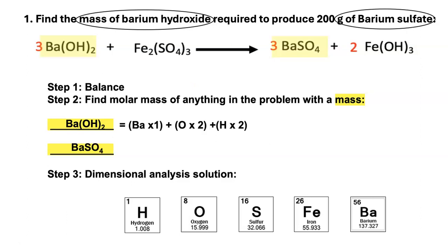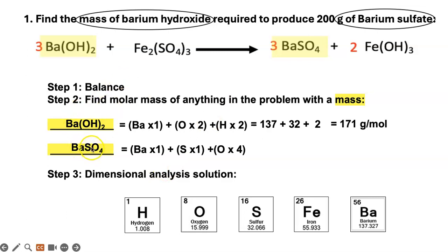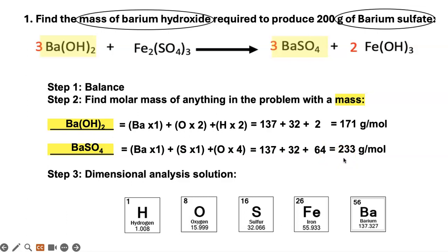Now let's do the molar mass calculations. For barium hydroxide: barium times one, plus oxygen times two, plus hydrogen times two. Substituting the atomic mass values, you get 171 grams per mole — that's the mass of one mole of barium hydroxide. For barium sulfate: one mole of barium, plus one mole of sulfur, plus four moles of oxygen, giving you those values respectively. Adding them together gives you 233 grams per mole.